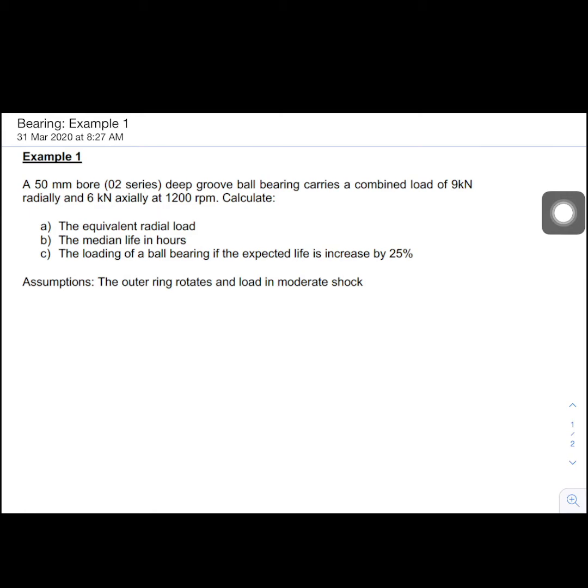Calculate: the equivalent radial load, the median life in hours, and the loading of a ball bearing if the expected life is increased by 25%. Assume that the outer ring rotates and load in moderate shock.